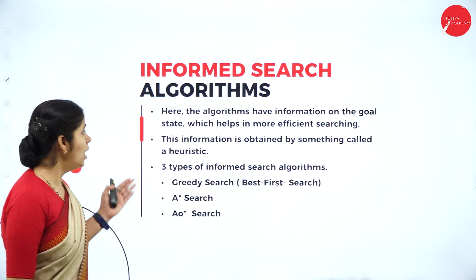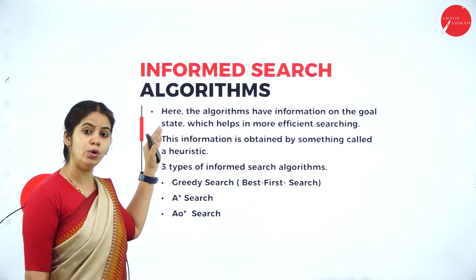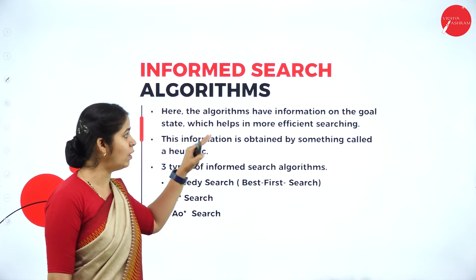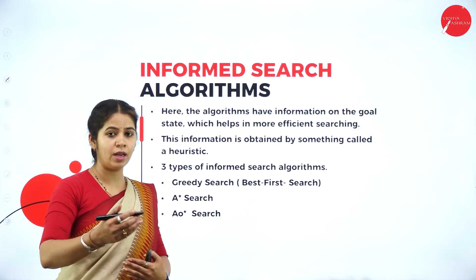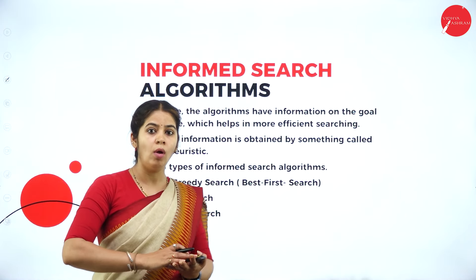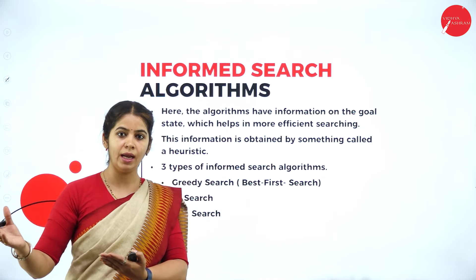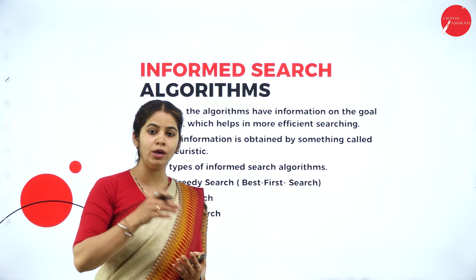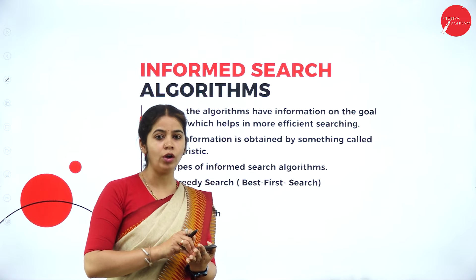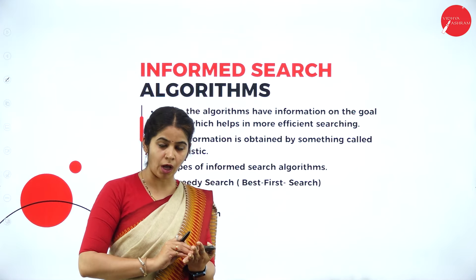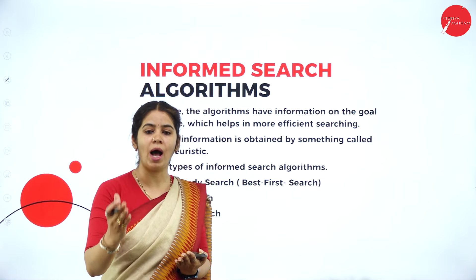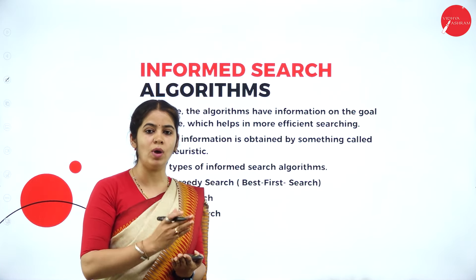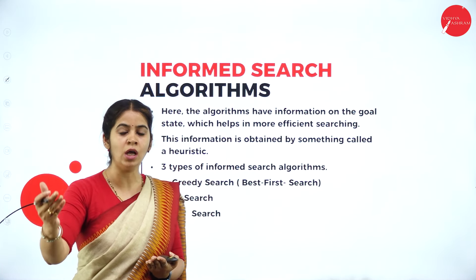In the informed search algorithm, we have information about the goal state. We should know which is our goal state and where we are reaching exactly, which helps us be more efficient in searching. For example, if you want to go to Mysore Palace, you should know the goal. You will have many ways to go to Mysore Palace, but you will select the optimum one — either the shortest path or the path where traffic is very less. Depending on the situation or criteria, we change the path of reaching the goal state.